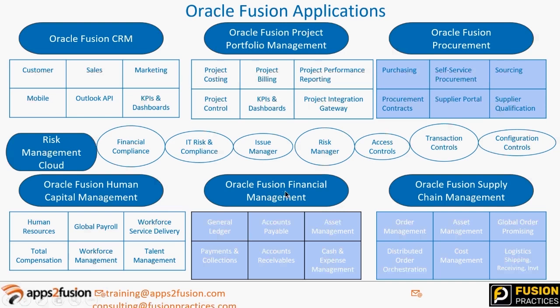The area of focus for this training will be Fusion Financials Management — GL, AP, AR, fixed assets, and cash management. We will cover these modules in detail, doing a small implementation. The training structure will cover terminologies, process flows, concepts, and then setups. We'll build our own chart of accounts, ledger, GL setups, journal sources, journal categories, and business units to do our own transactions.